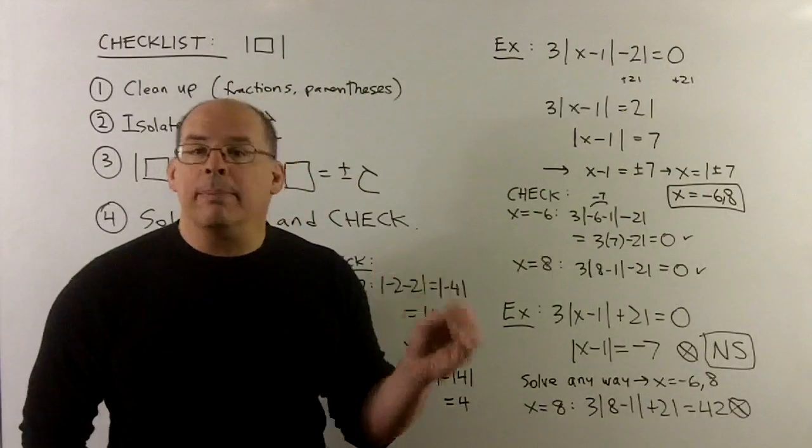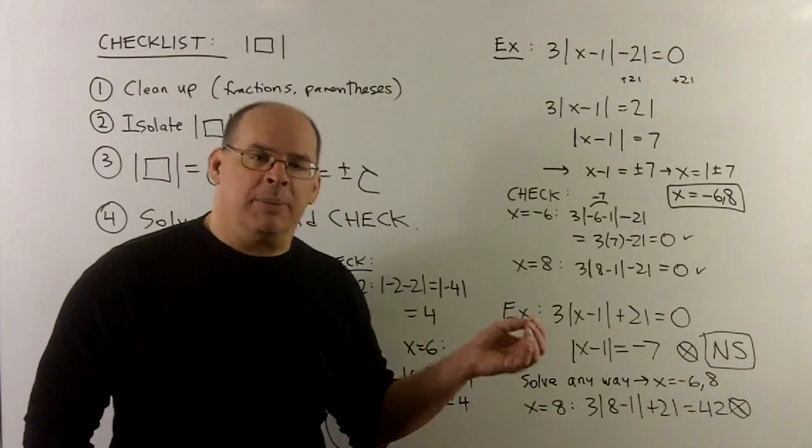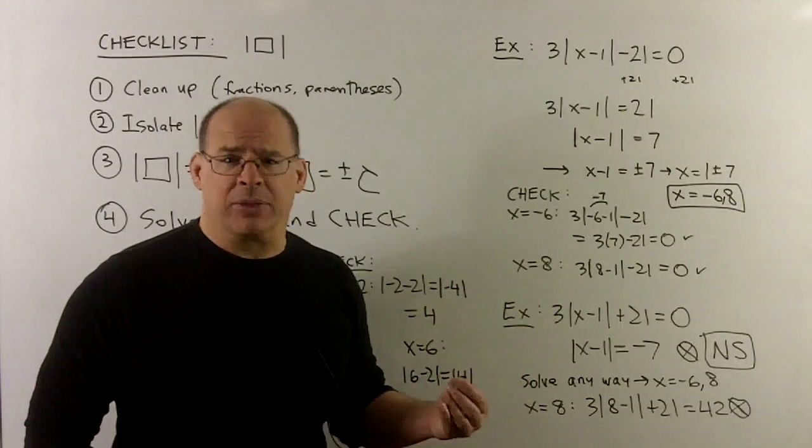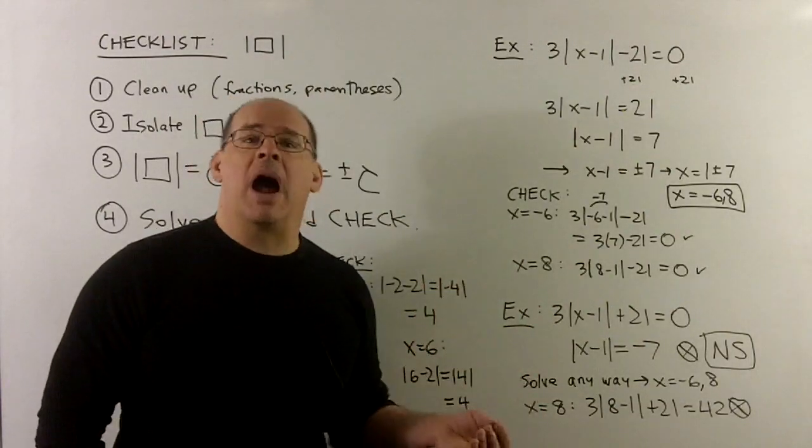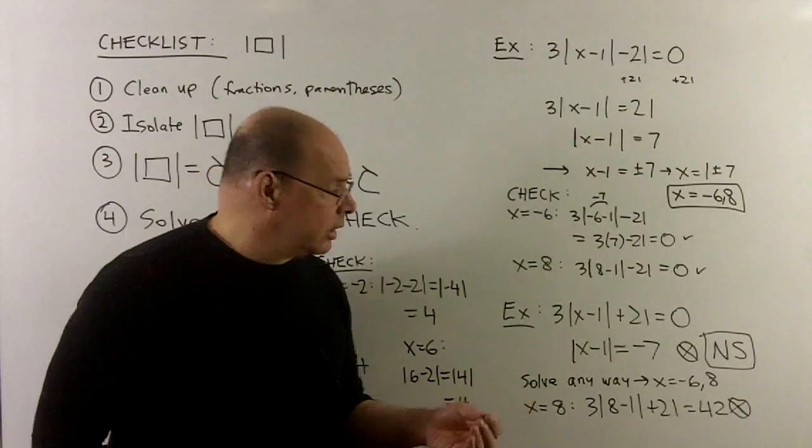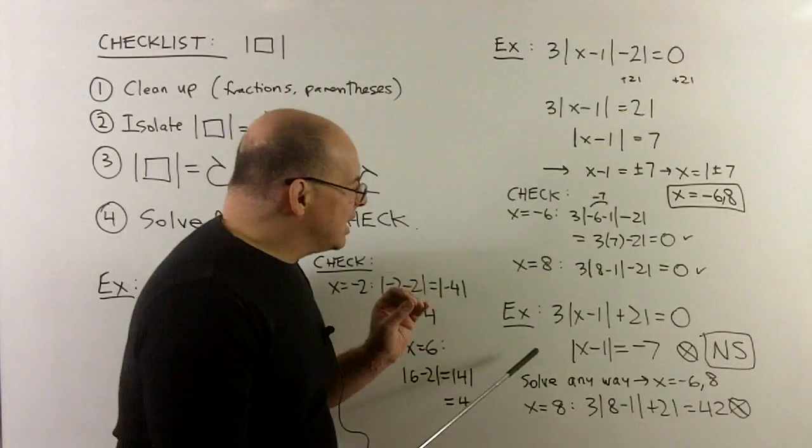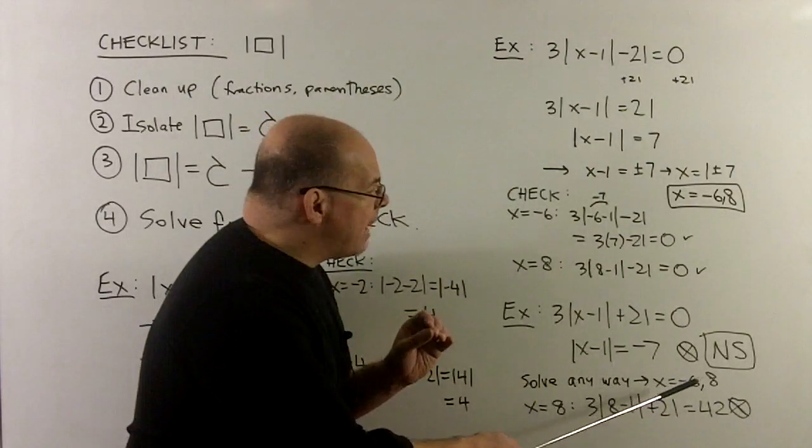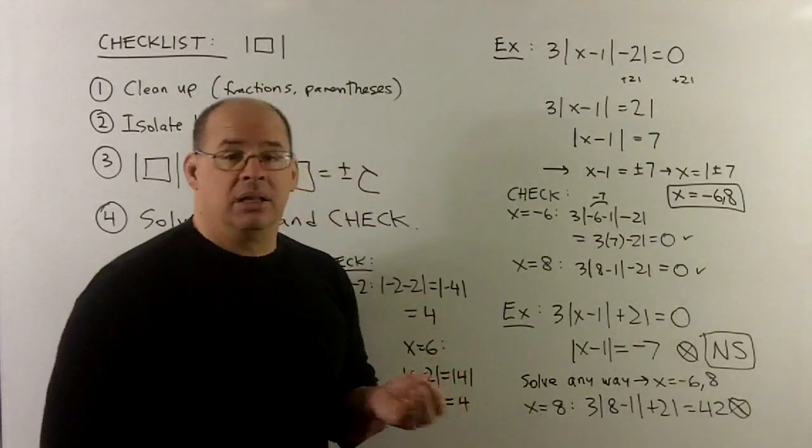So you can automatically go to no solution. But typically, what happens is you forget. And you just go ahead and solve, finish out the procedure. Not a problem as long as you check your work. And so were we to just continue with the plus minus, you'll still get the answers of minus 6 and 8.